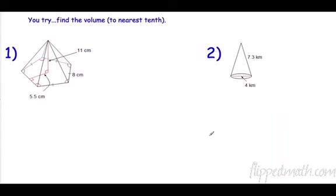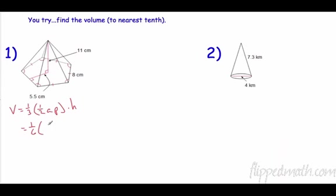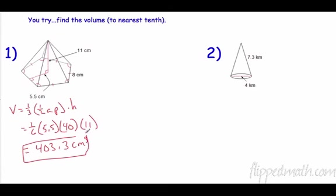Pause the video, try these on your own. Welcome back. First one: volume equals one-third times the area of the base. It's a regular pentagon, so the base area is one-half times apothem times perimeter. One-third times one-half is one-sixth. The apothem is 5.5, the perimeter is 8 times 5 sides which is 40, and the height is 11. Multiply it all together and you get 403.3 cubic centimeters.